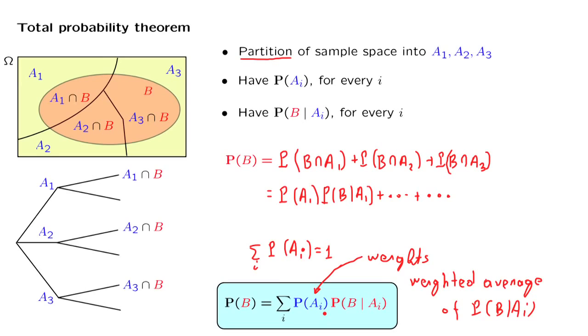One final comment. Our derivation was for the case of three events, but you can certainly see that the same derivation would go through if we had any finite number of events. But even more, if we had a partition of our sample space into an infinite sequence of events, the same derivation would still go through.